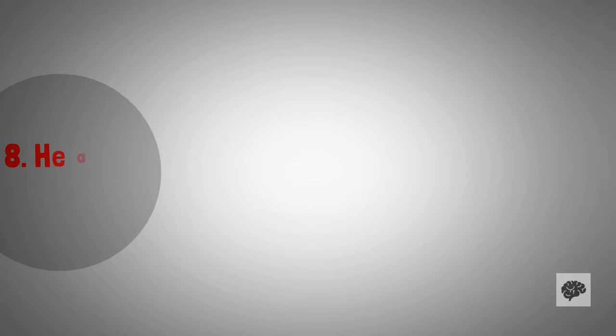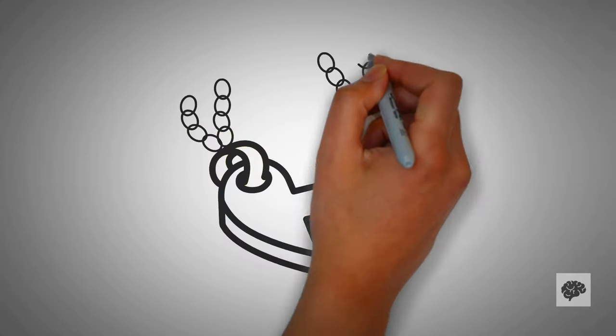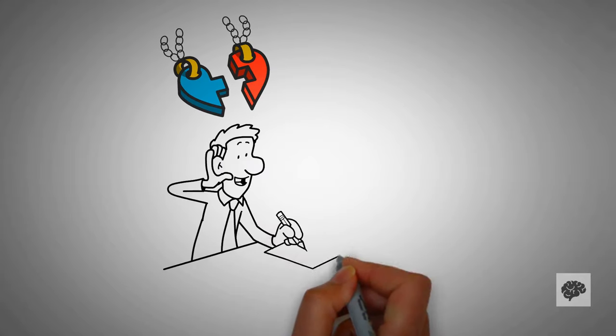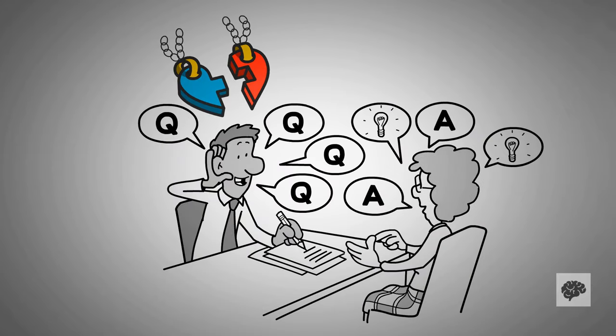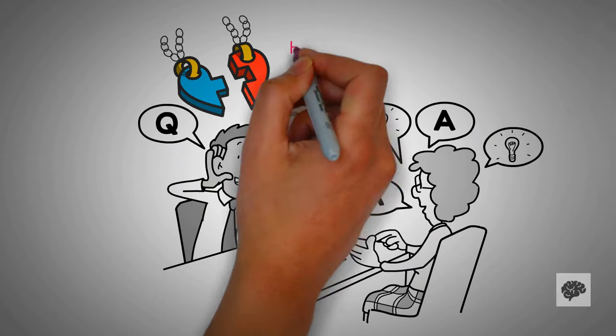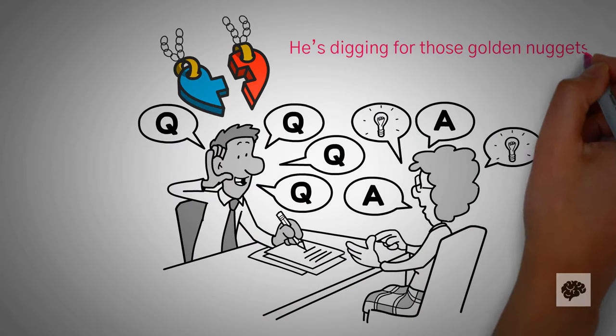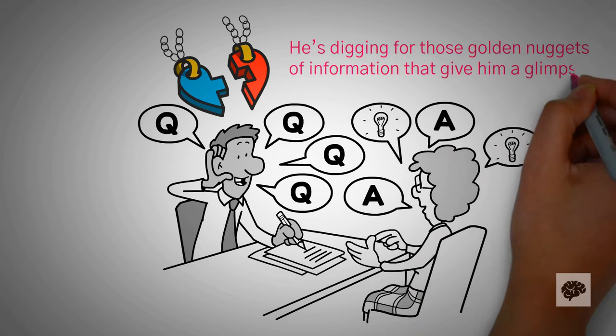Number eight, he asks questions. Here's the thing, when a guy's got a secret crush on you, he turns into the grand inquisitor. If he's asking you how you nailed that math equation or what you're up to over spring break, it's not just small talk. He's digging for those golden nuggets of information that give him a glimpse into your world.